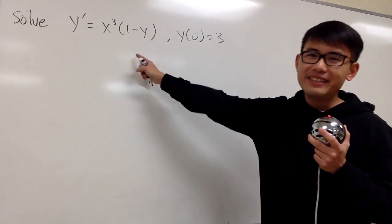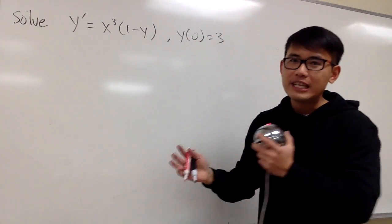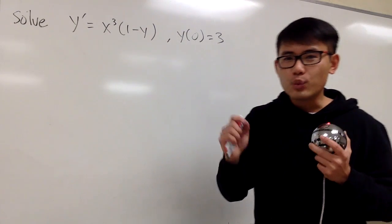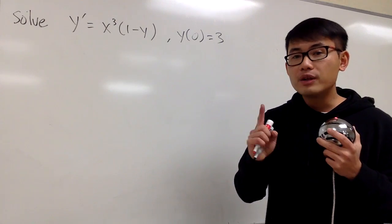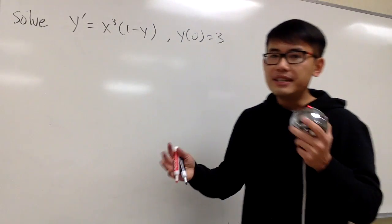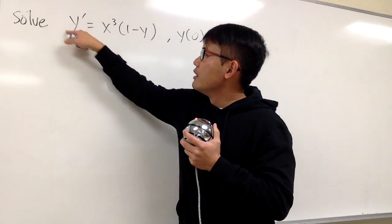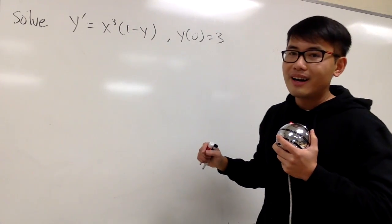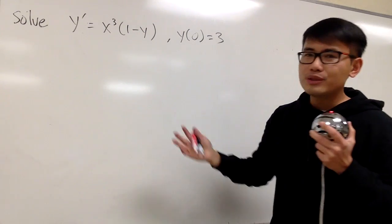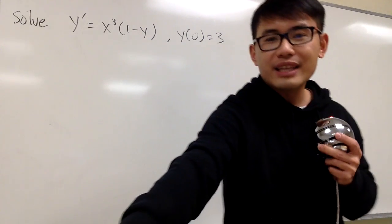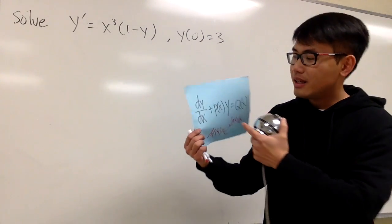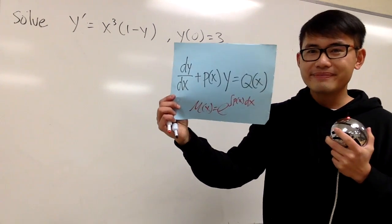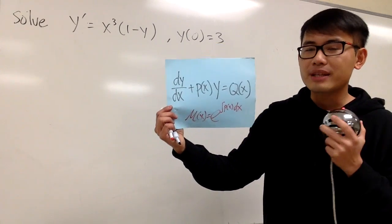We did this last time, and the way that we did it was to separate the variables. However, this is also a first-order linear differential equation — first-order because we have the first derivative, and linear because we have the derivative to the first power only, and y is also to the first power. In order to use that strategy, we have to make sure the equation is in the form dy/dx plus p(x) times y equals q(x), so that we can find the correct integrating factor.